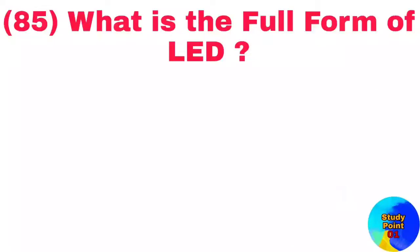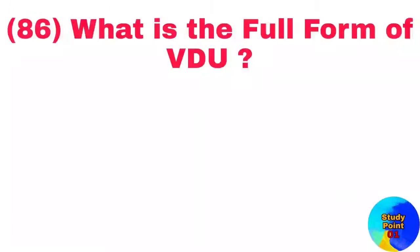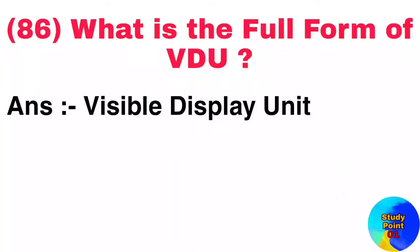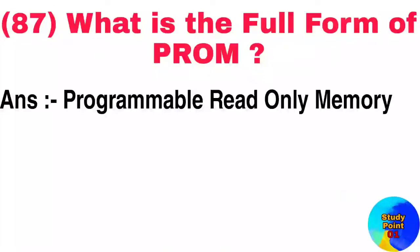Question number 85: What is the full form of LED? Answer: Light emitting diode. Question number 86: What is the full form of VDU? Answer: Visible display unit. Question number 87: What is the full form of PROM? Answer: Programmable read-only memory.